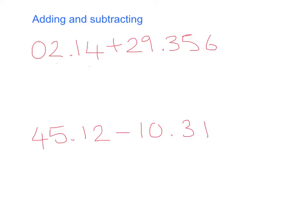So the first thing we're going to look at is adding and subtracting with decimals. When you have numbers that are adding and subtracting with decimals like these ones, what you're going to do is rewrite these numbers and line up these decimals. So as I do that I'm going to write the numbers in: 02.14 plus 29.356. As you notice the first thing I did was I lined up these decimals. They need to be lined up in order for us to be able to add.